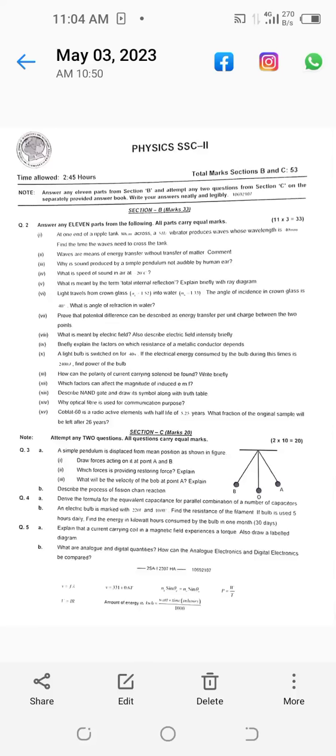Assalamu alaikum, 10th class physics. Today's paper, Section B, part number one. At one end of a ripple tank 80 cm across, a five hertz vibrator produces waves whose wavelength is 40 mm. Find the time the waves need to cross the tank. Number two: waves are means of energy transfer without transfer of matter. Comment.